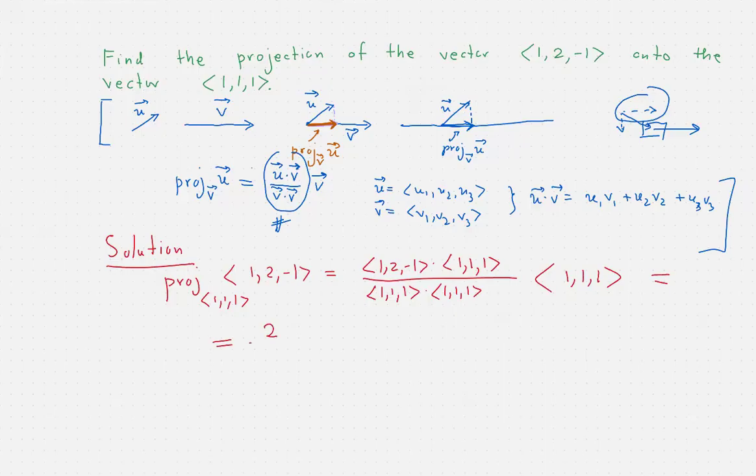So what do we get? On the top we get two, the dot product is two. On the bottom we get three. And then this is <1, 1, 1>. So all together what we get is <2/3, 2/3, 2/3>, and that's it, that's our projection. So very simple once we know how this formula works and we saw what this projection represents. Thanks for watching.